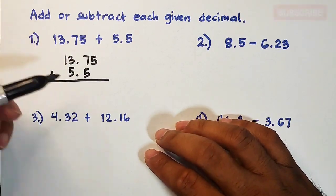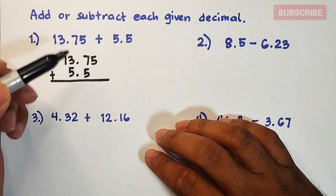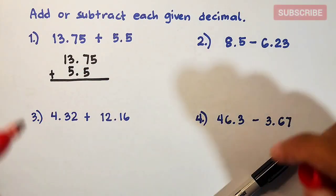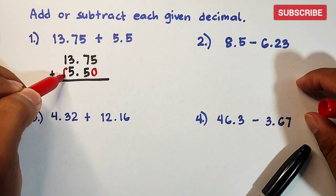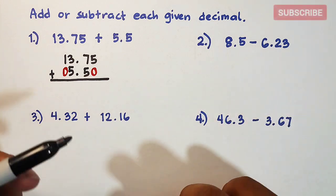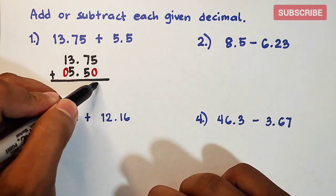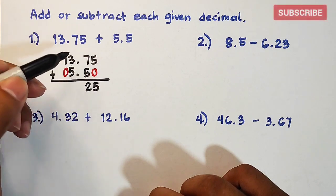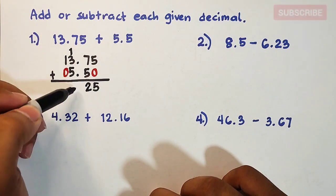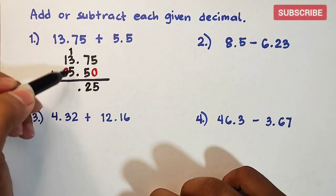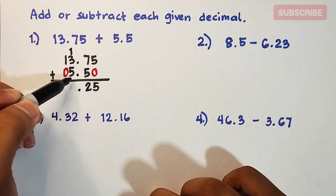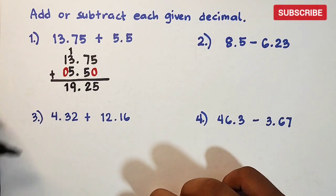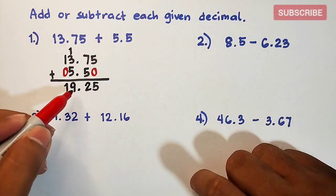As you can see, there are blank spaces here, so we need to fill in zeros. Starting to add: 5 plus 0 is 5, then 7 plus 5 is 12, so we put 2 here and carry 1. Bring down the decimal, then add: 1 plus 3 plus 5 is equal to 9, then 1 plus 0 is equal to 1. The final answer for our first example is 19.25.